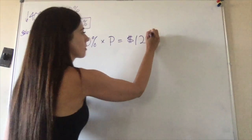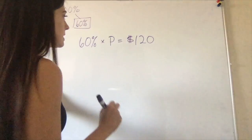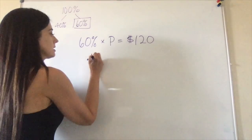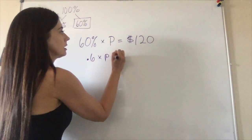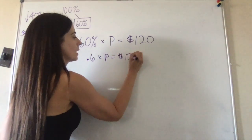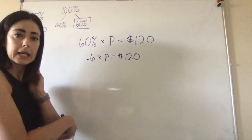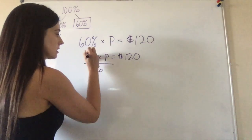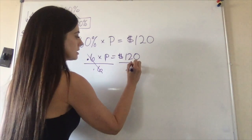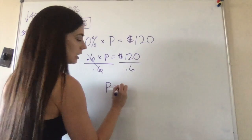Sixty percent as a decimal is 0.6 times p equals 120. Now to get p by itself to find out the original price, I'm going to divide each side by 0.6. Those cancel out: 0.6 and p equals...